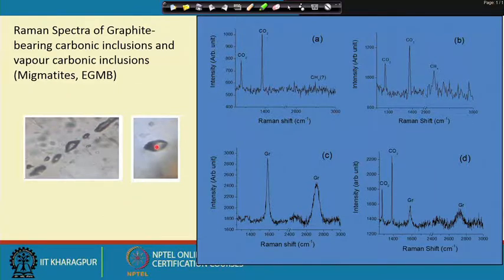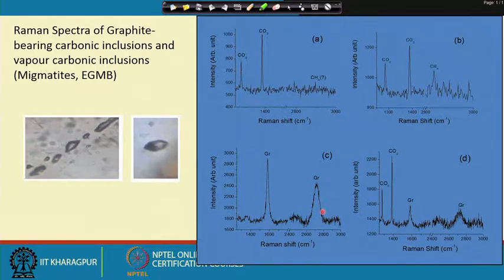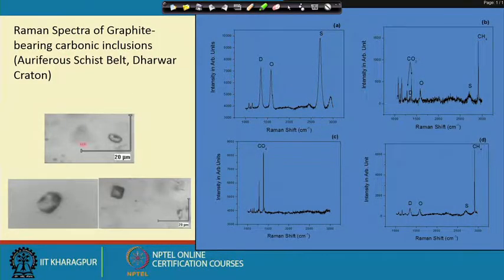Putting the laser beam somewhere on the boundary of the graphite fibers and the liquid gives both the two CO2 peaks and the graphite spectrum. Graphite peaks are well known — one at around 1350 cm⁻¹, another at about 1580 cm⁻¹, and the third at about 2700 cm⁻¹. One has to consult the standard literature for updated information on Raman spectral characteristics of different gaseous and solid species so that any unknown fluid inclusion sample can be identified.